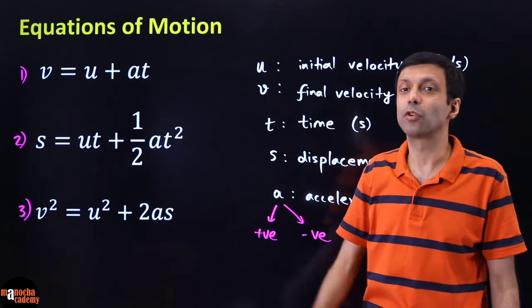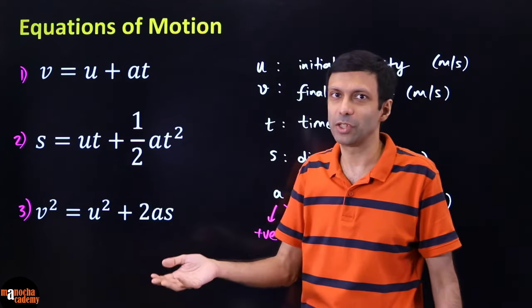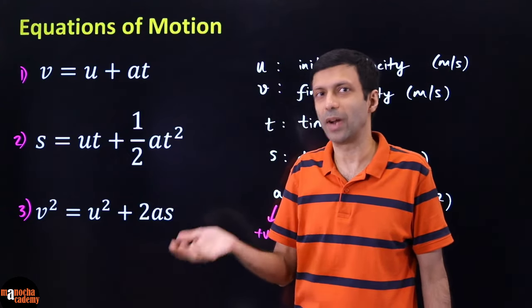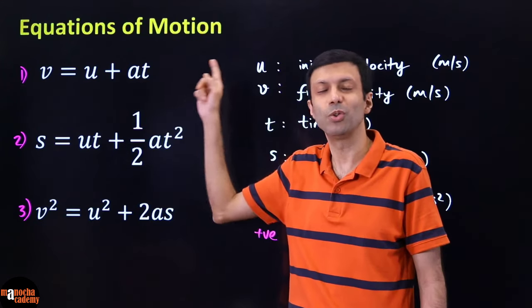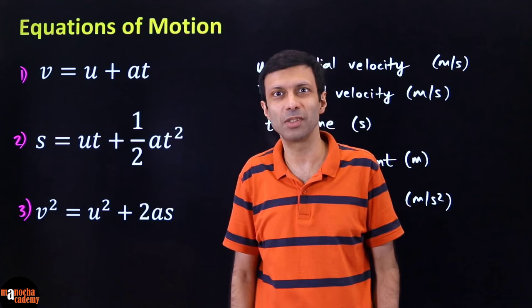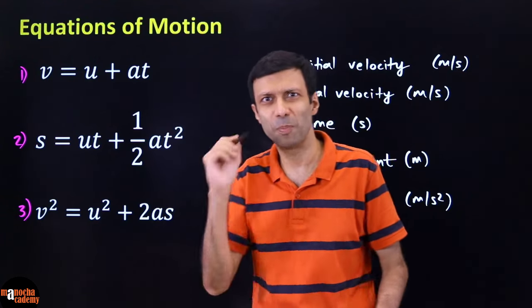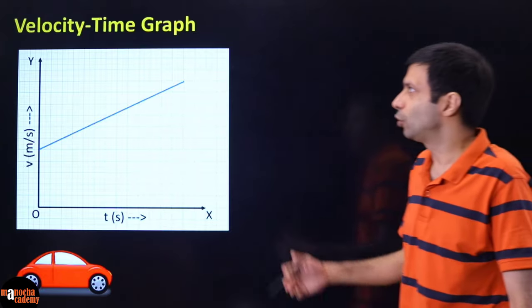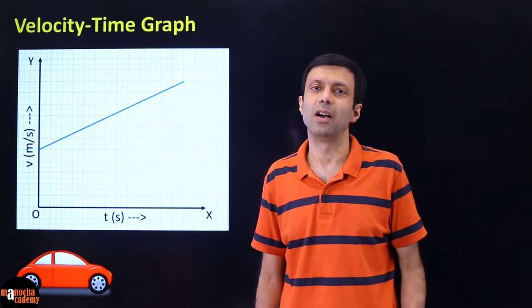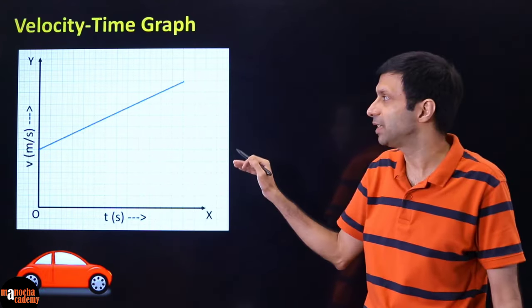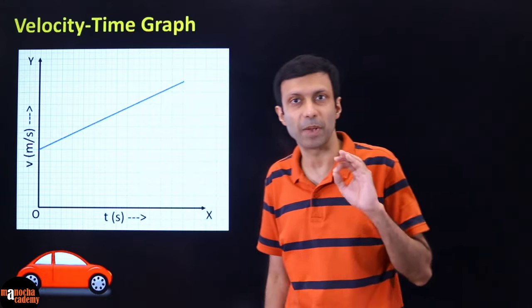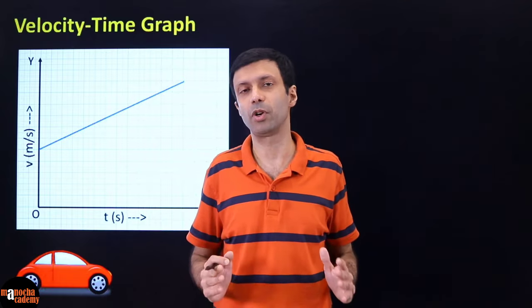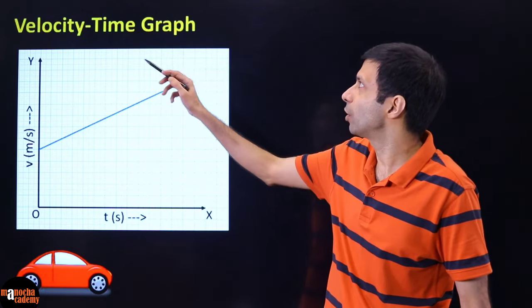These are the three important equations of motion. The acceleration formula V minus U by T can be rearranged to give V equals U plus AT. The best way to learn these equations is to pick up a pen and paper and write them down. In today's class we'll be looking at graphs, so it'll be great if you have graph paper, or at least use paper to sketch the axes so you will understand this topic better.